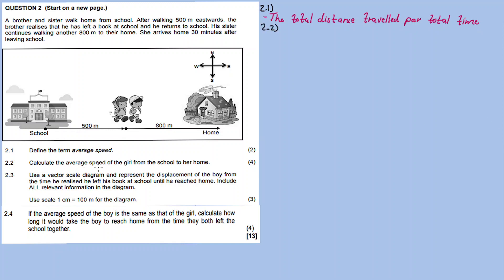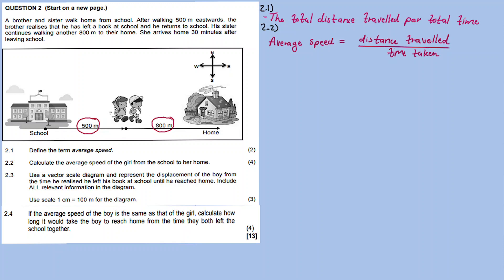Question 2.2: calculate the average speed of the girl from the school to her home. The formula for average speed is total distance traveled divided by the total time taken to travel that journey from point A to point B. So the distance the sister traveled is 500 plus 800 meters — that is the total distance.